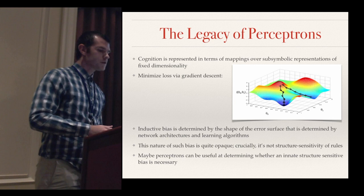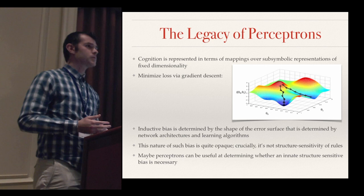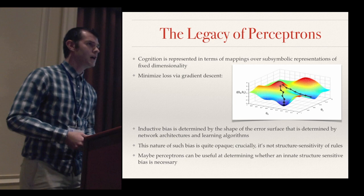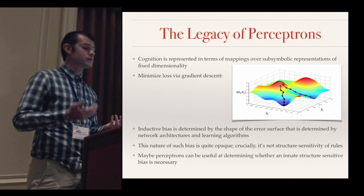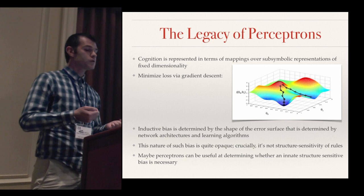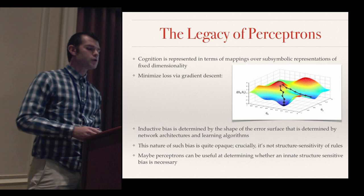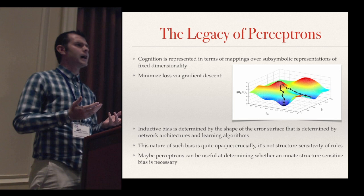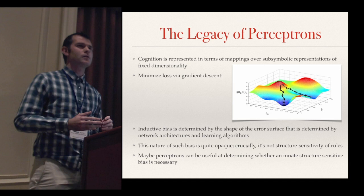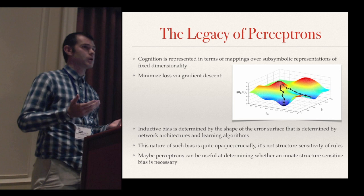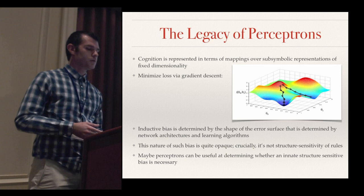For the legacy of perceptrons: in the theory of perceptrons, cognition is represented in terms of mappings between subsymbolic gradient representations, and the exact functions learned are found via minimizing the loss using gradient descent. The inductive bias of the algorithm is determined by the shape of the error surface on the loss function, and also perhaps by the network architecture. The exact nature of that bias is very opaque, but one thing we can be confident of is that it is not a bias relative to whether rules are structure-sensitive or not. Given that fact, perceptrons might be a useful tool for addressing whether an innate structure-sensitive bias needs to be present in a language learner.